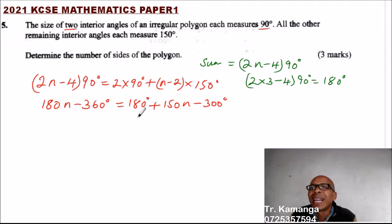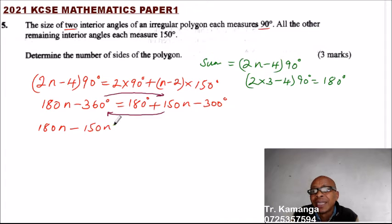So we put the like terms together. We take 150 to the other side - it becomes negative - and we take 360 to the other side. So we end up with 180n minus 150n equals 360 plus 180 minus 300.